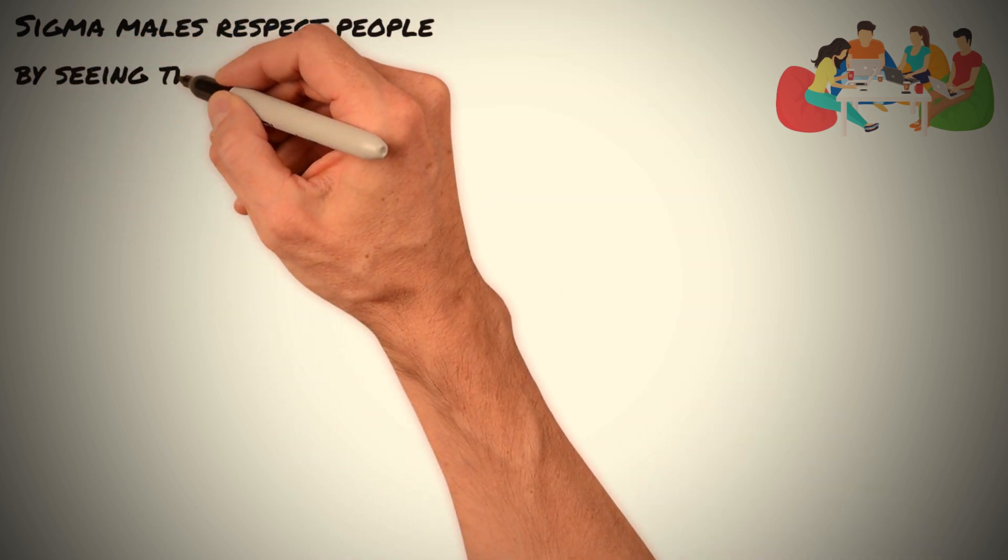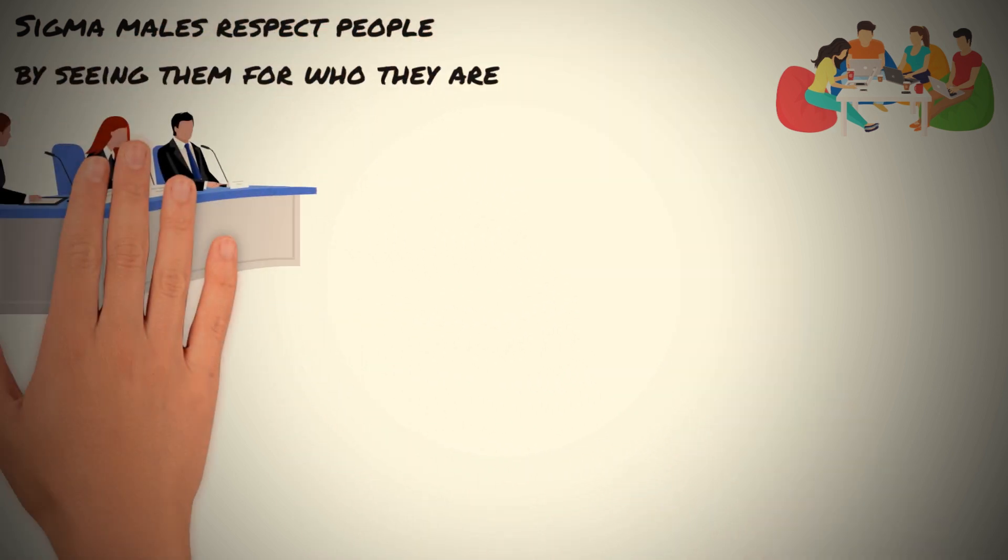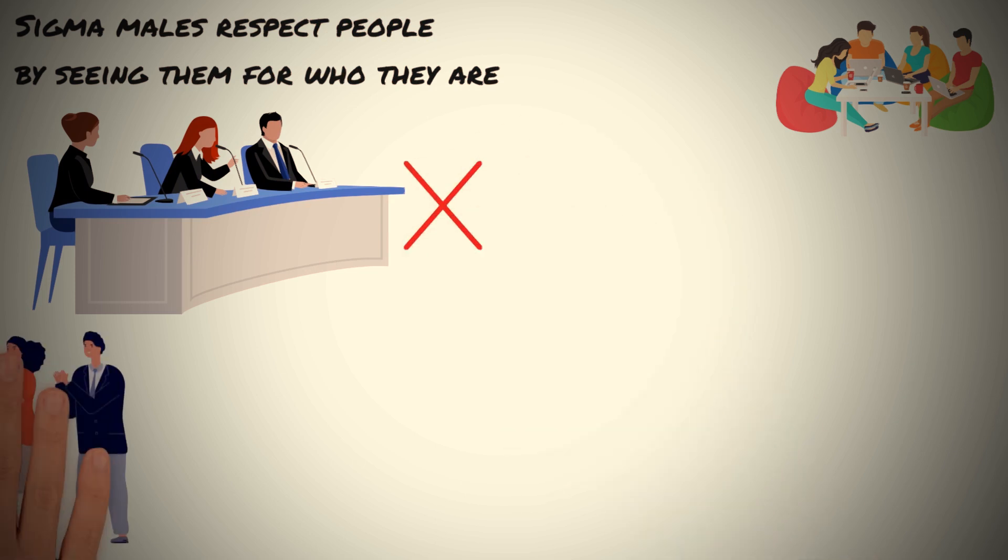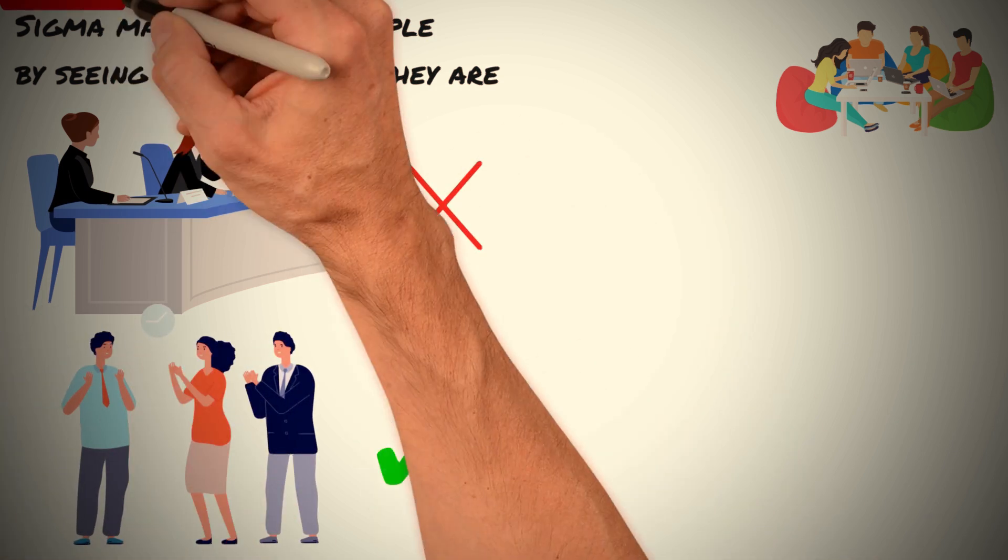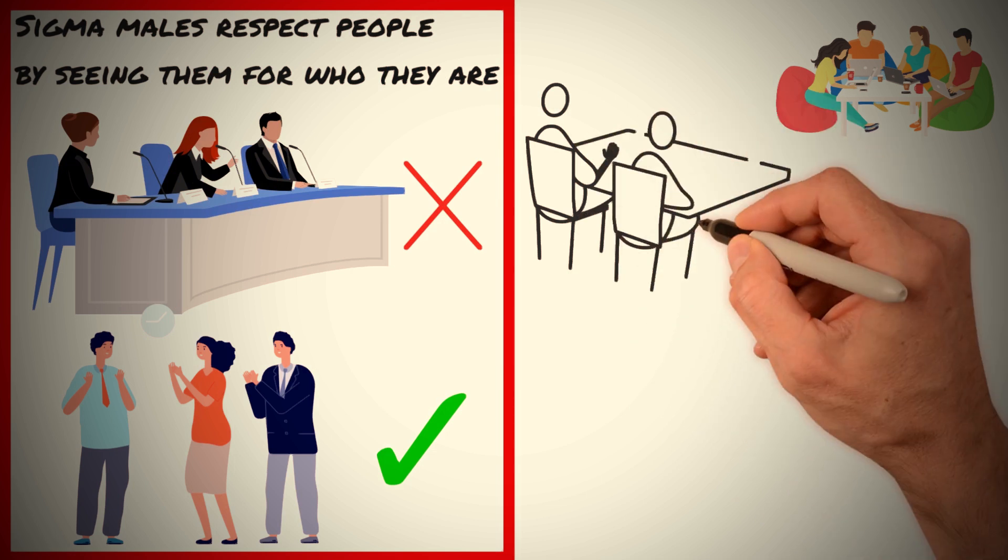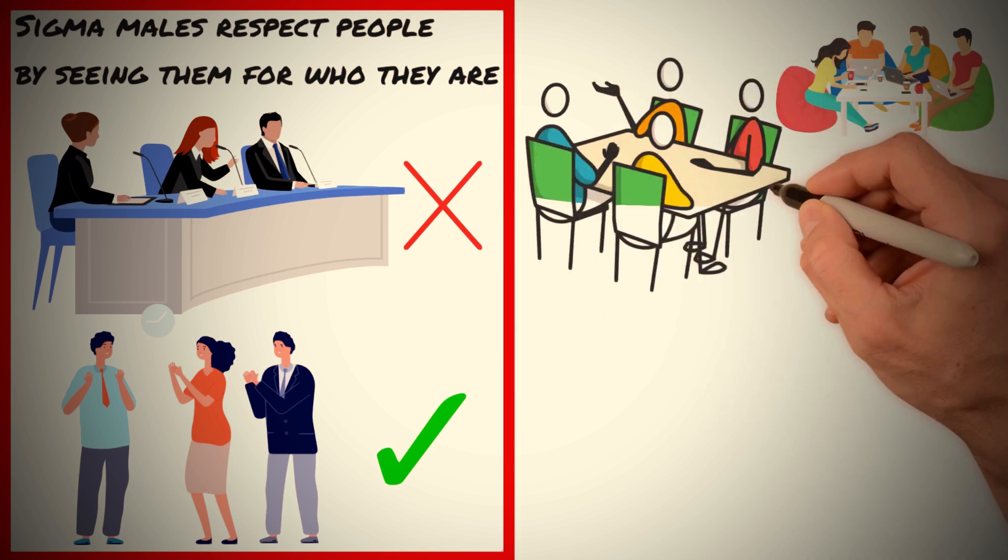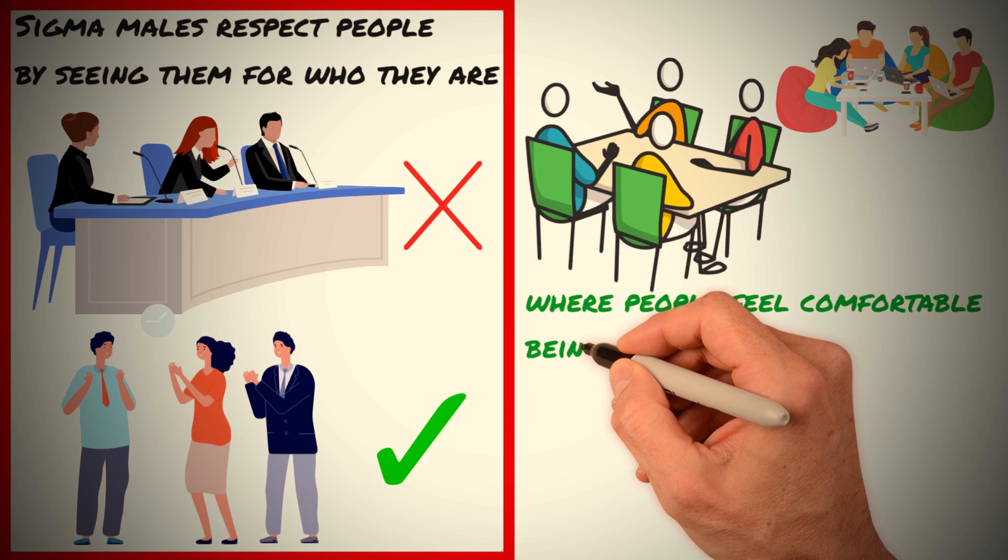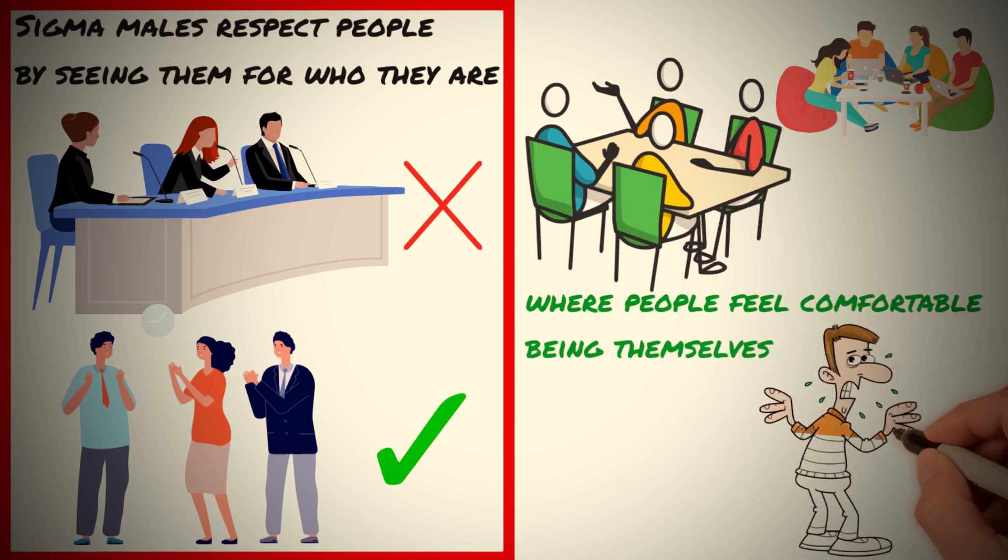In essence, Sigma males respect people by seeing them for who they are, not judging them for their mistakes or shortcomings, and appreciating the unique qualities that make them who they are. This attitude of respect creates an environment of trust and openness, where people feel comfortable being themselves without fear of judgment or criticism.